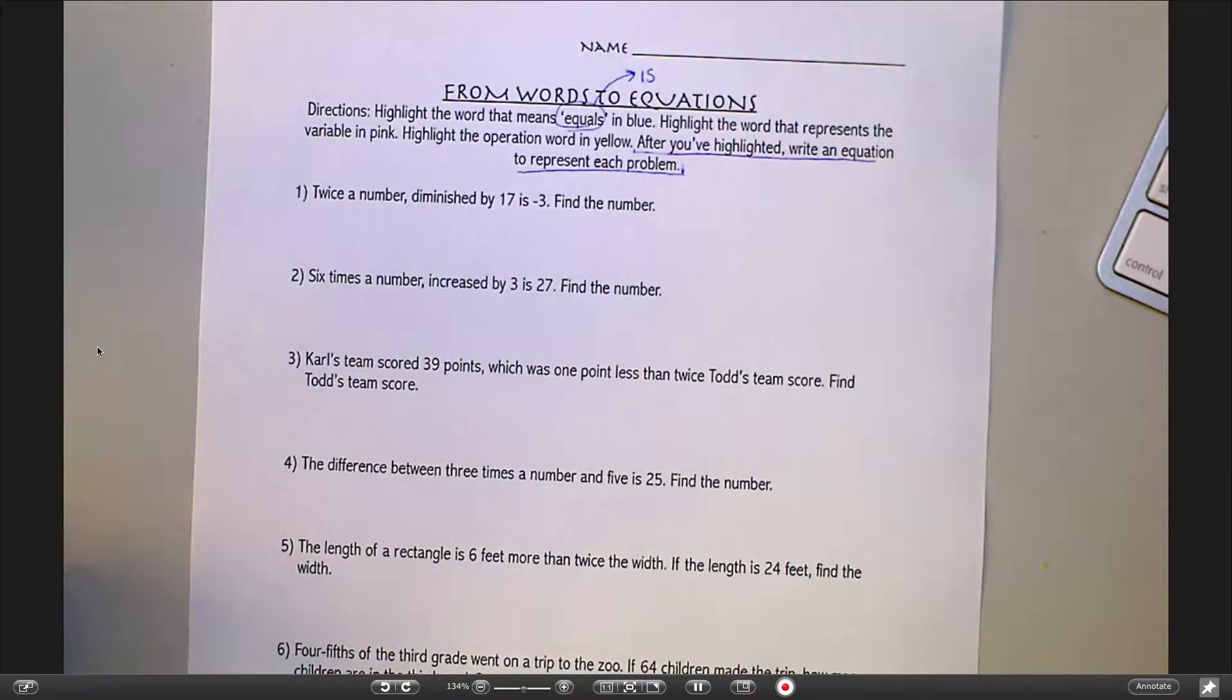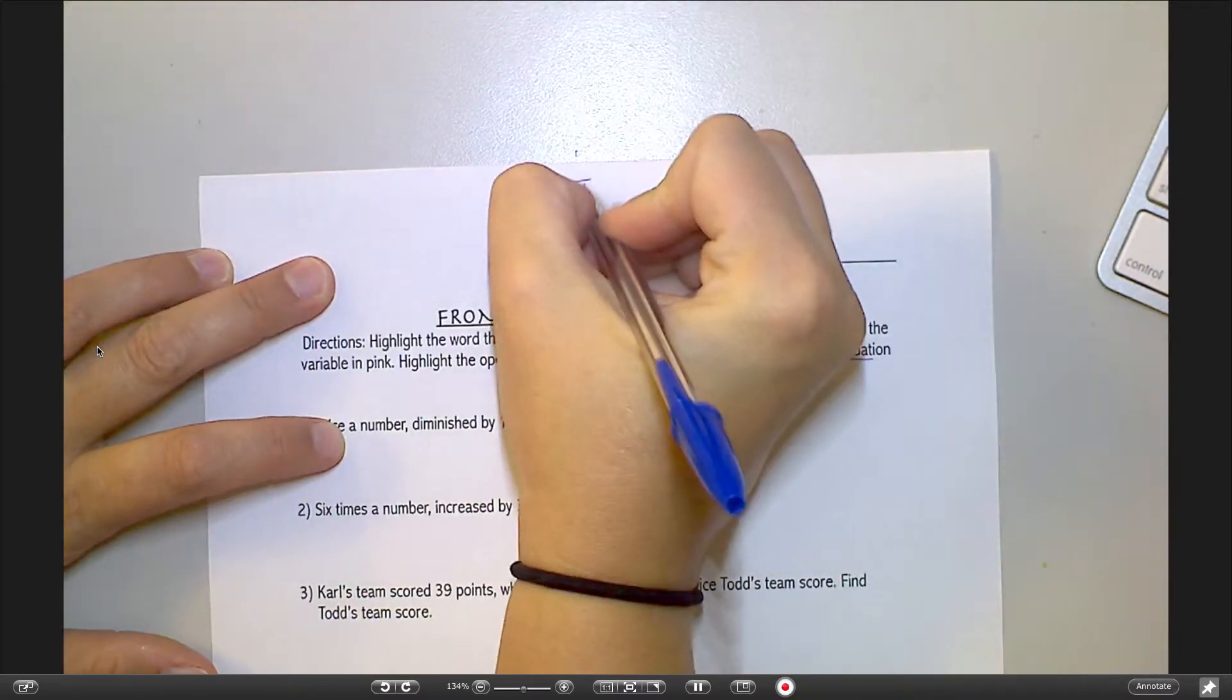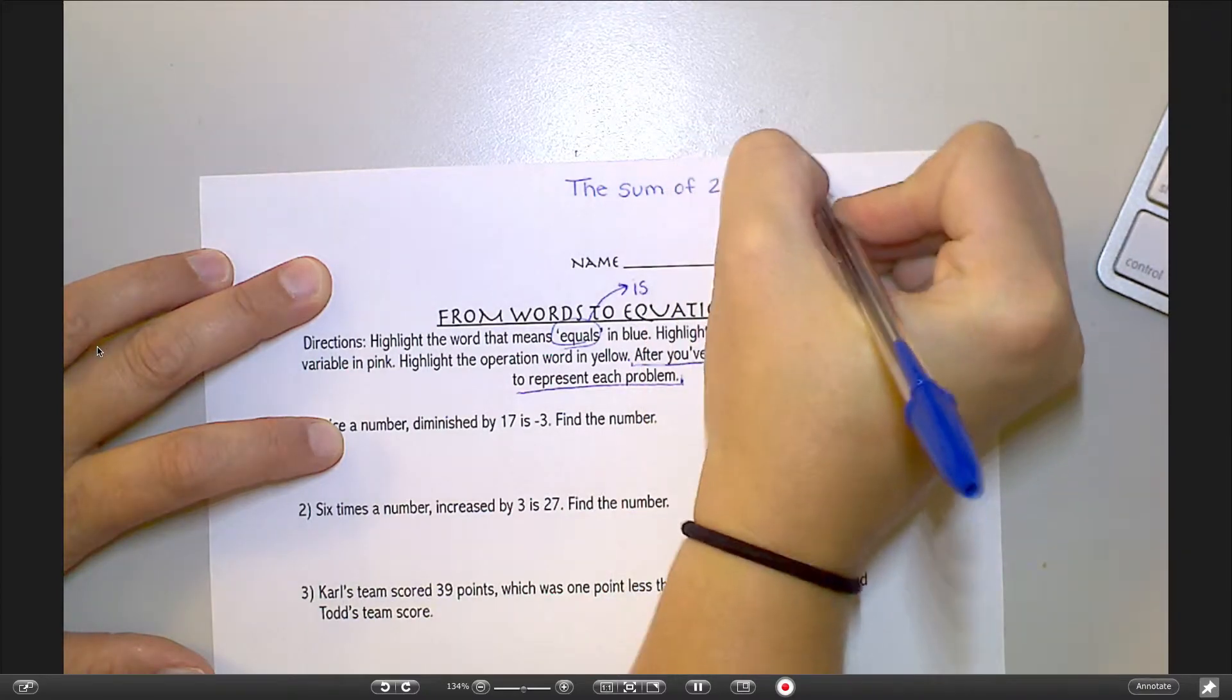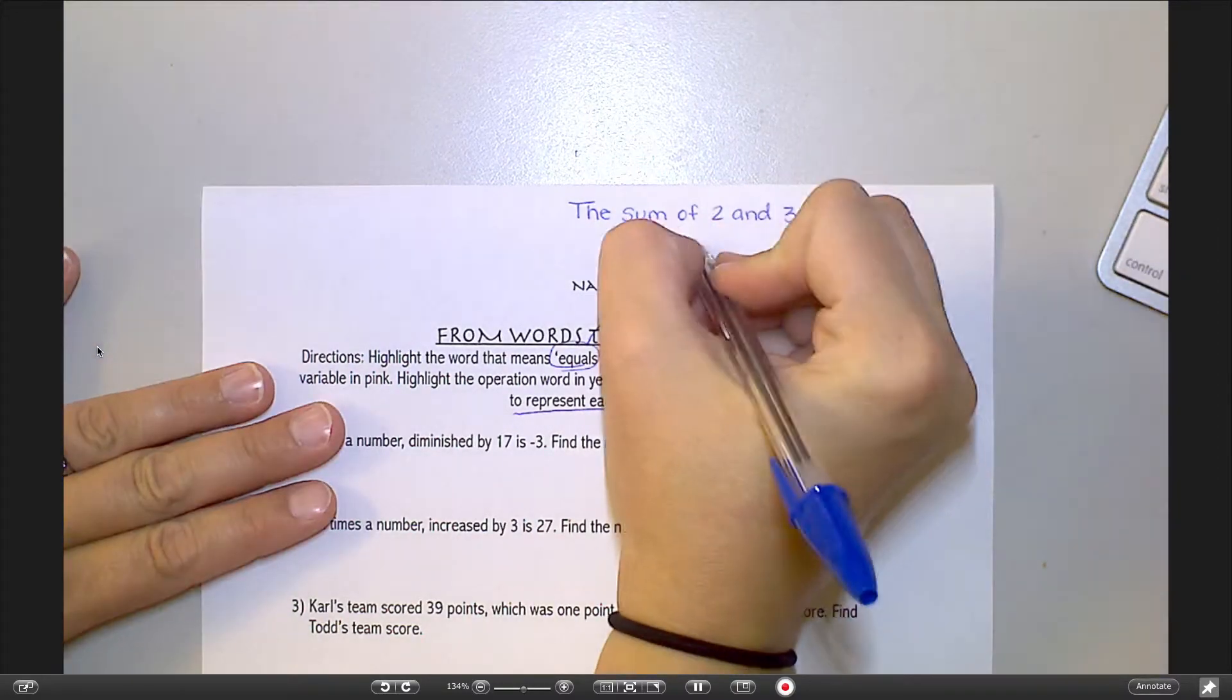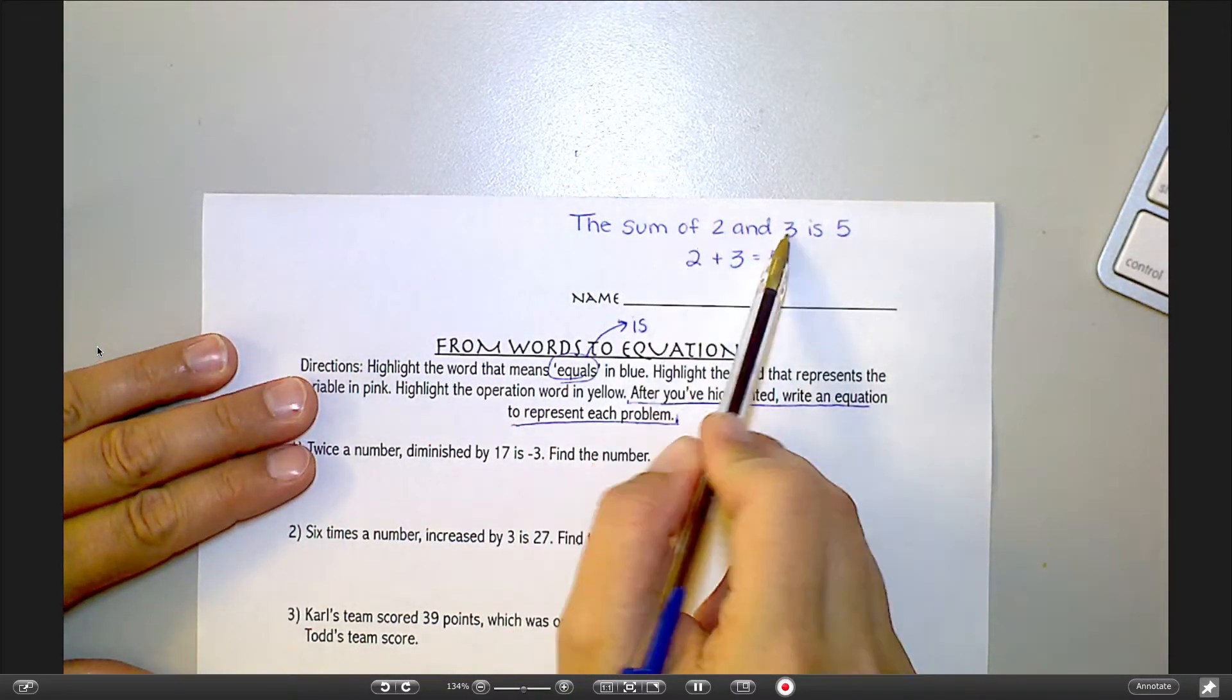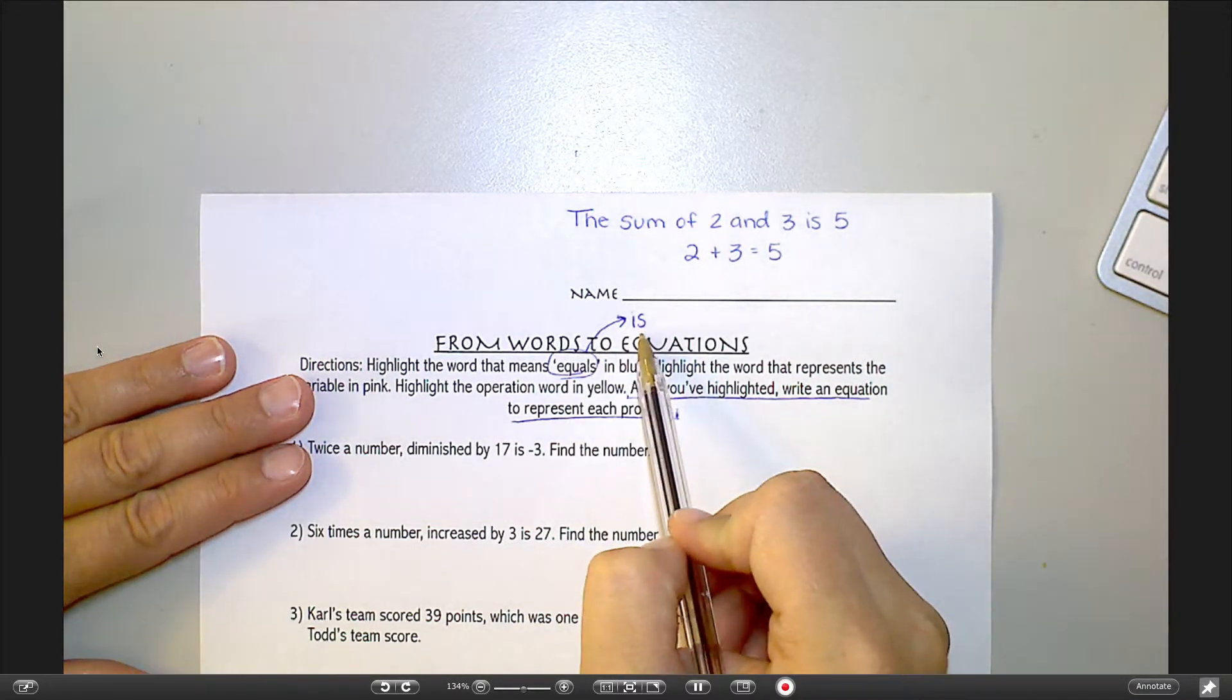If I were to say the sum of 2 and 3 is 5, let me write that out for you real quick. I could write that as an equation like this: 2 + 3 = 5, because sum means to add. My numbers are 2 and 3 and it equals 5.